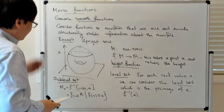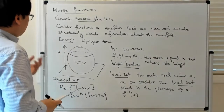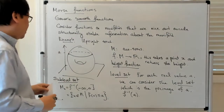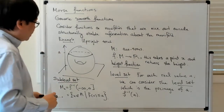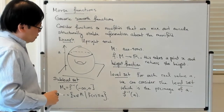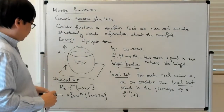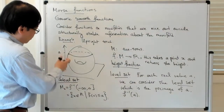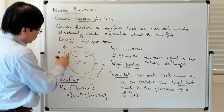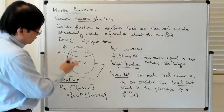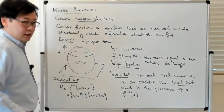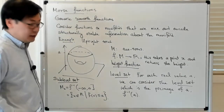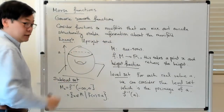If you can construct a function on a manifold which is somehow nice, what's going to happen is that the sub-level sets associated with that function will encode some sort of topological information about the manifold. In particular, knowing how the sub-level set changes as you vary A gives you interesting information about the topology of the manifold.